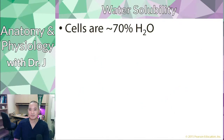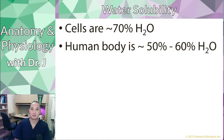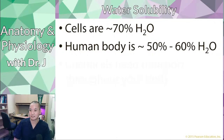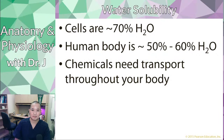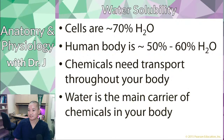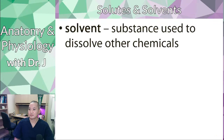Why does this matter? Your cells are about 70% water, and the human body — depending on age, sex, height, weight, and body composition — is about half to a little over half water. Chemicals also need to be transported throughout your body, and water is a great way of doing that. Water is the main carrier of chemicals in your body.